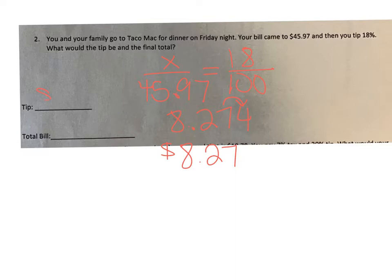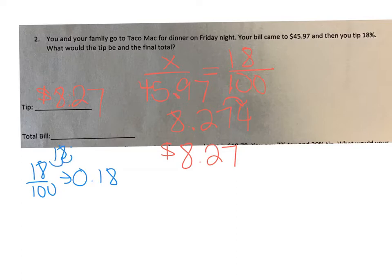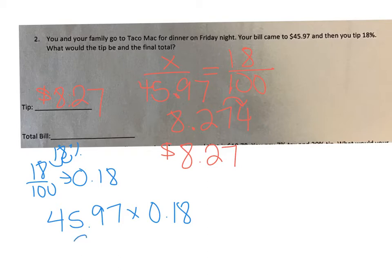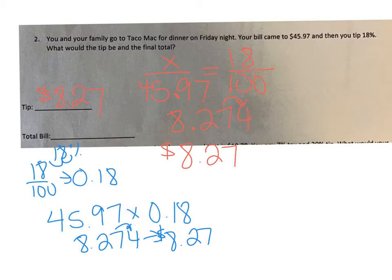That is your tip. Here's another way you could do it: change 18% to a decimal by moving the decimal point to the left twice, giving you 0.18. Then just take your bill and multiply it by 0.18, which gives you the same answer. Rounded, that's $8.27. So you can always set up a proportion, or convert your percent to a decimal and multiply it by your bill.